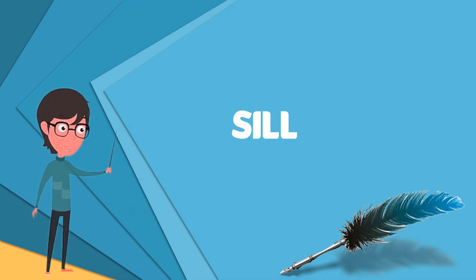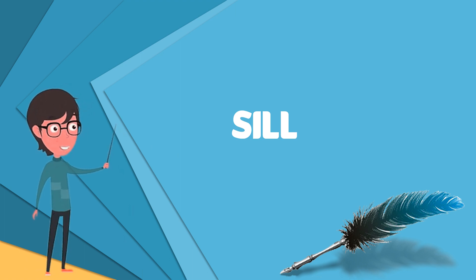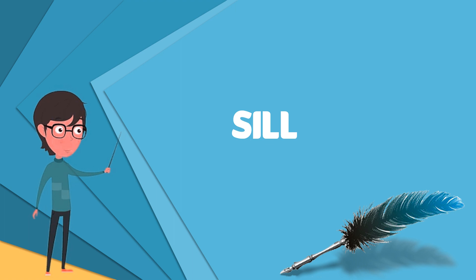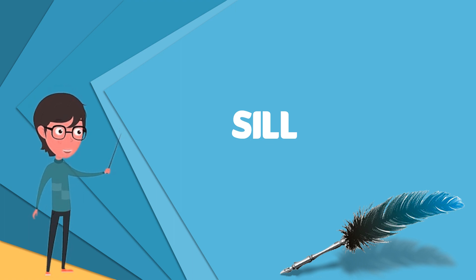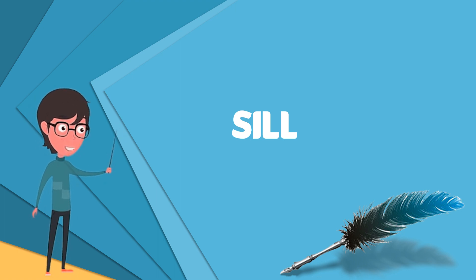In geology, a sill is a tabular sheet intrusion that has intruded between older layers of sedimentary rock, beds of volcanic lava or tuff, or along the direction of foliation in metamorphic rock. A sill is a concordant intrusive sheet, meaning that a sill does not cut across pre-existing rock beds.